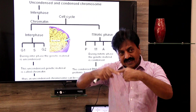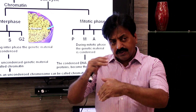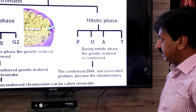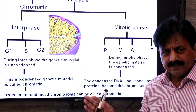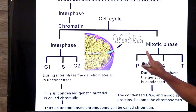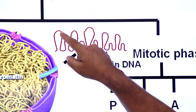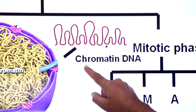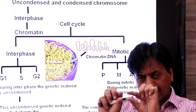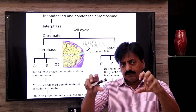Here chromatin's coiling starts. When they are less coiled, they are uncondensed chromosomes; when they are more coiled, they are condensed chromosomes. The DNA molecules are open in chromatin — this is chromatin's DNA, which is less condensed. This DNA is packaged around histone proteins by coiling, forming units called nucleosomes.